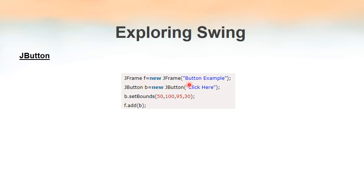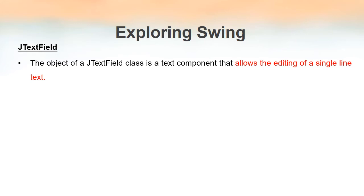In the code example, we create a frame f with the title "Button Example". We create a button b using the second constructor of JButton, passing "Click Here" as the parameter — this will be the label displayed on the button. We set the button's bounds to specify its position and size, and finally add the button to the frame by calling f.add(b).